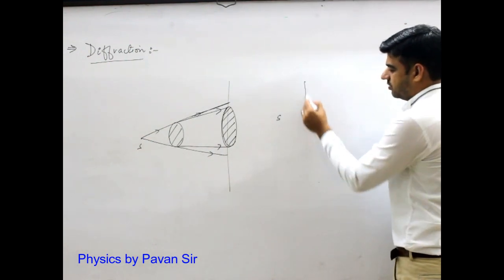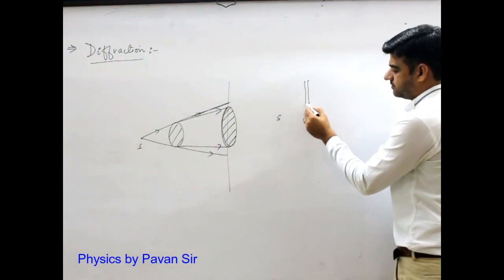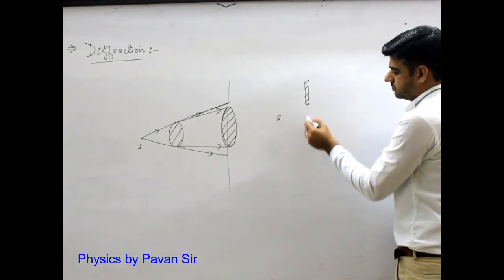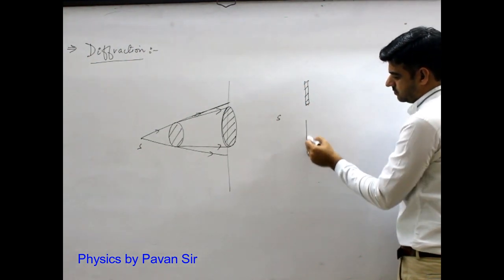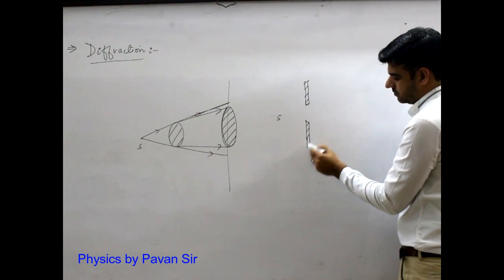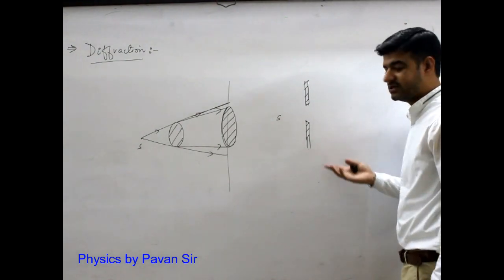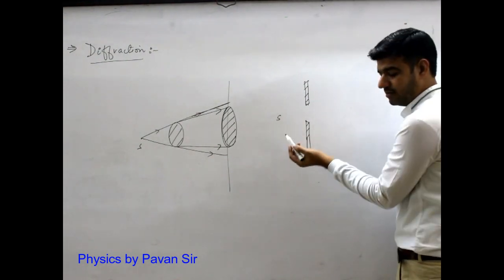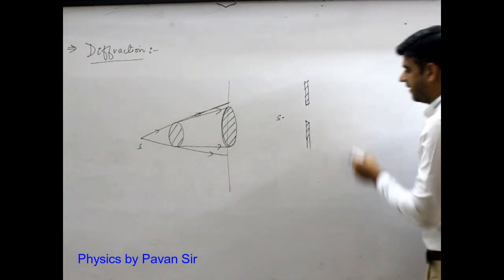Even if you put a source here and put a slit in front of it. This is a cardboard with a slit. This is a slit in front of the hole. And this is the source of light. And this is the screen.